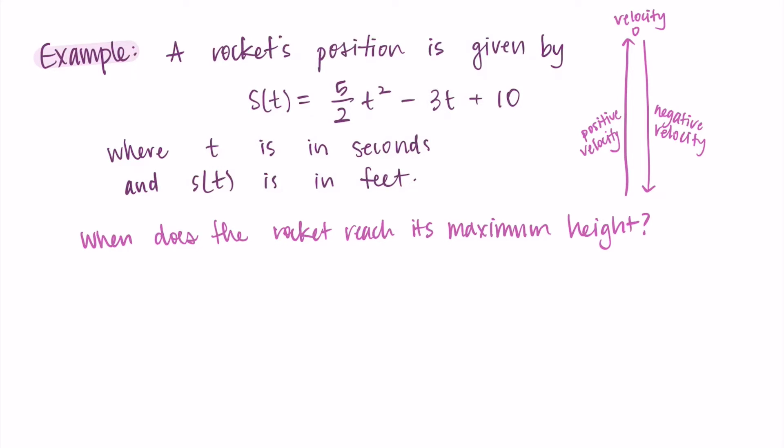Then when it's at that top point, it's not getting closer or further away, so the velocity is zero. And as it falls back down to the earth, the velocity is negative since it's approaching the original starting point.